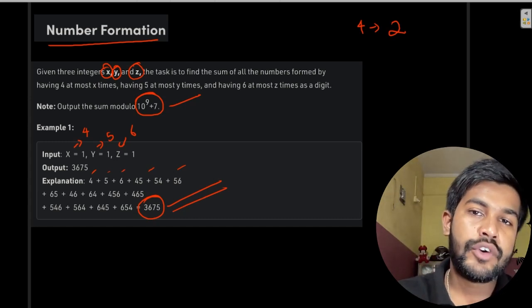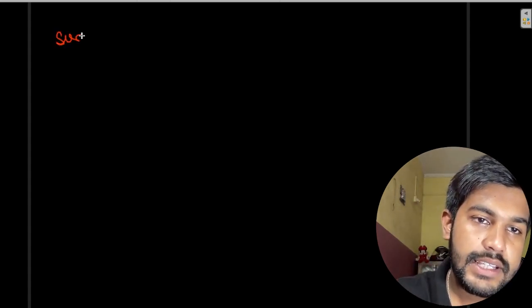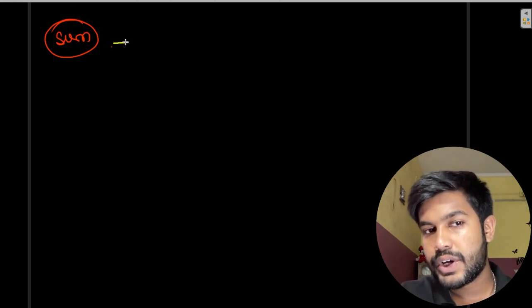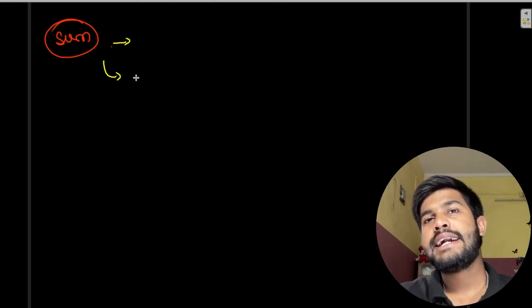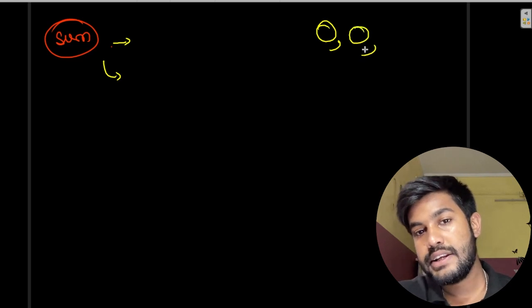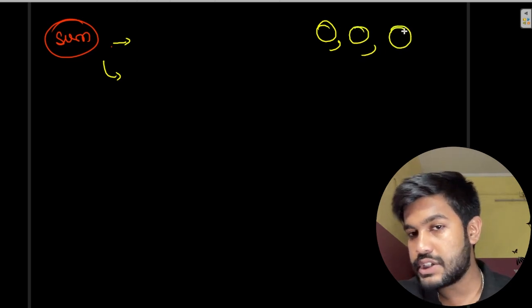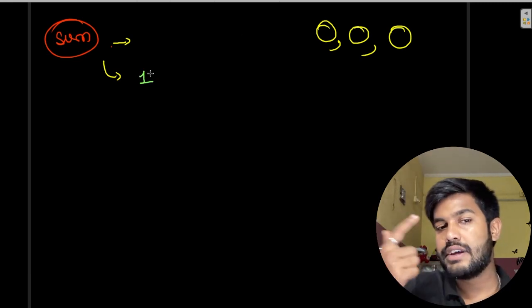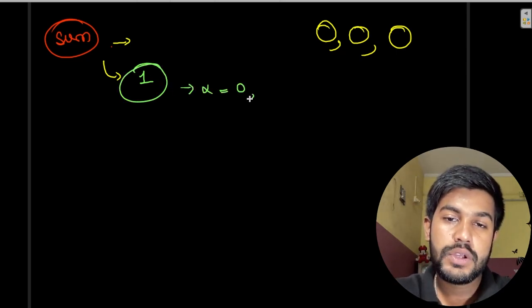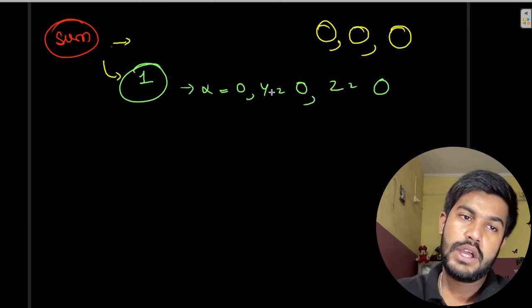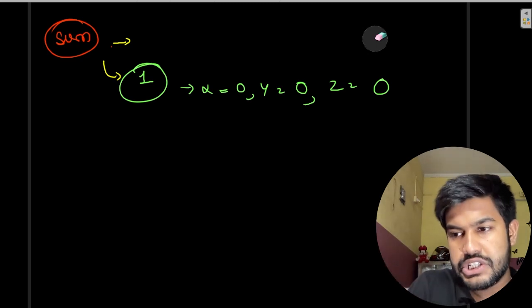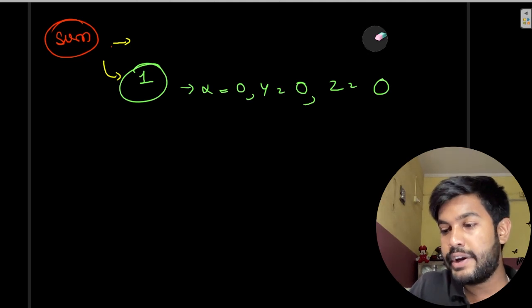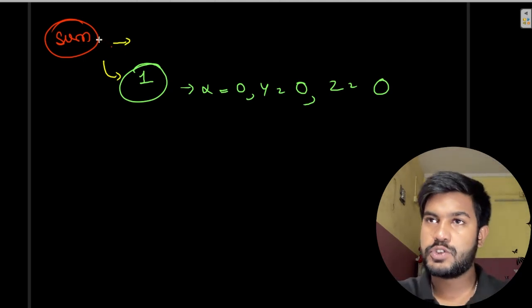Whenever we try to solve a DP problem, the first thing that should hit our mind is the state. We are asked to find the sum. The intuition would be: suppose when we are allowed to have zero fours, zero fives, and zero sixes — there is no way to form a number, so that count is one. So when x equals zero, y equals zero, and z equals zero, that is the base condition — the first invalid condition when it can't go any lower.